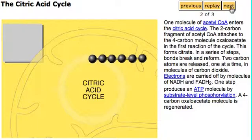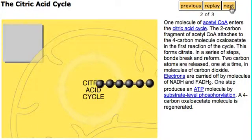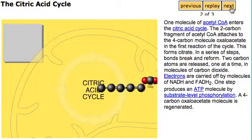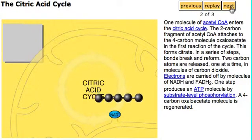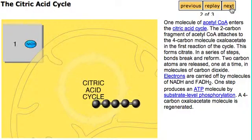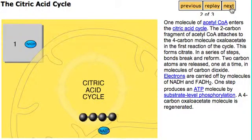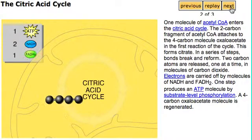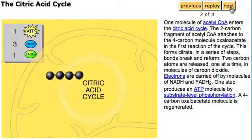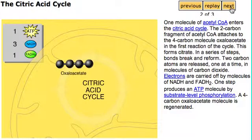In a series of steps, bonds break and reform. Two carbon atoms are released one at a time in molecules of carbon dioxide. Electrons are carried off by molecules of NADH and FADH2. One step produces an ATP molecule by substrate-level phosphorylation. A 4-carbon oxaloacetate molecule is regenerated.